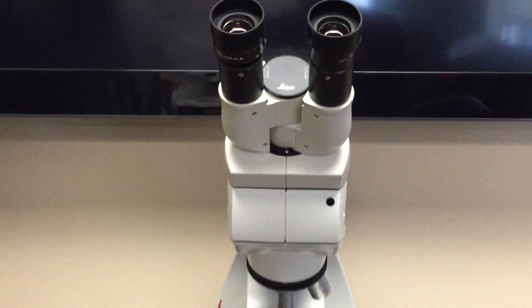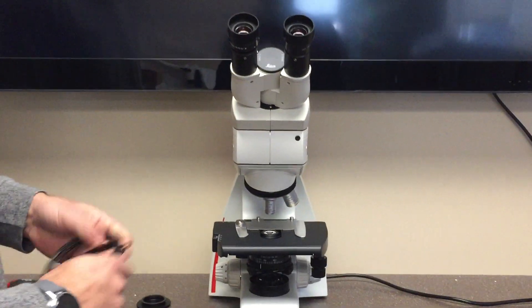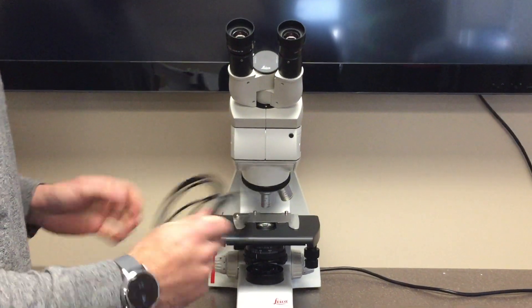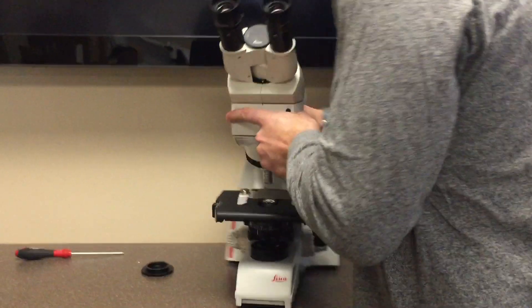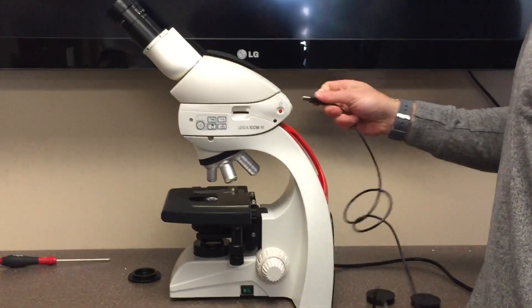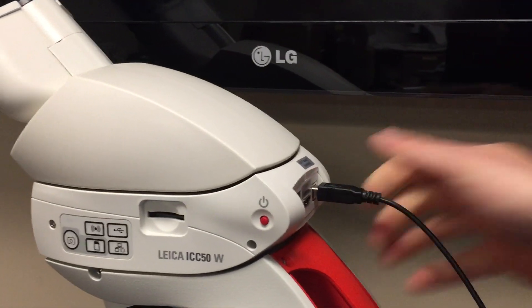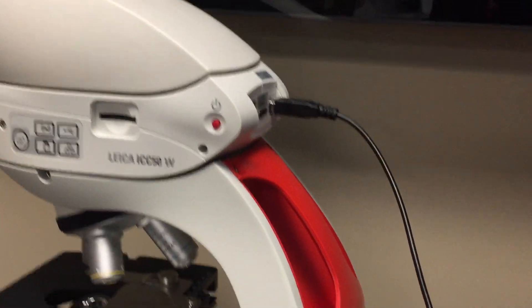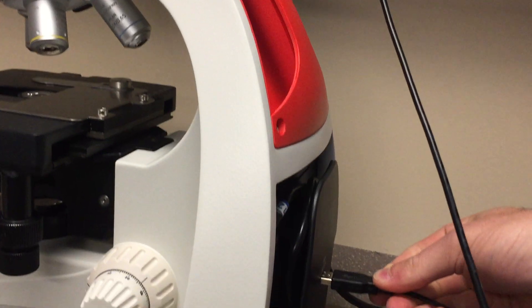Now the microscope is fully assembled. We're going to power the camera via the USB cord included. The camera runs off the USB cord, which plugs into the back side of the camera, and the microscope has a convenient USB power supply located in the back.